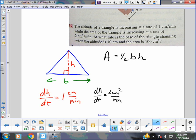And they want to know the rate of the base. They want to know db/dt when the height is 10 and the area is 100. That's our unknown.